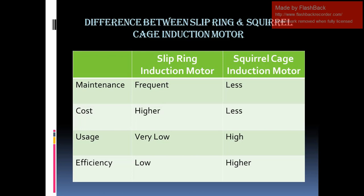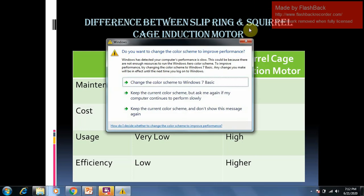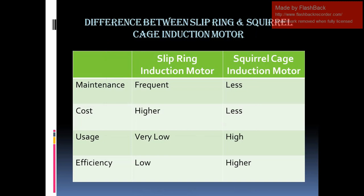Cost: in case of slip ring induction motor, because of higher maintenance and the presence of slip rings and brushes, cost is comparatively higher. While in case of squirrel cage induction motor, cost is less.